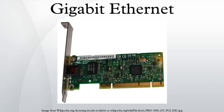Initially, Gigabit Ethernet was deployed in high-capacity backbone network links. In 2000, Apple's Power Mac G4 and PowerBook G4 were the first mass-produced personal computers featuring the 1000BASE-T connection, and it quickly became a built-in feature in many other computers. Higher bandwidth 10 Gigabit Ethernet standards have since become available, as the IEEE ratified a fiber-based standard in 2002 and a twisted pair standard in 2006. As of 2009, 10 Gigabit Ethernet is replacing 1 Gigabit as the backbone network and has begun to migrate down to high-end server systems.